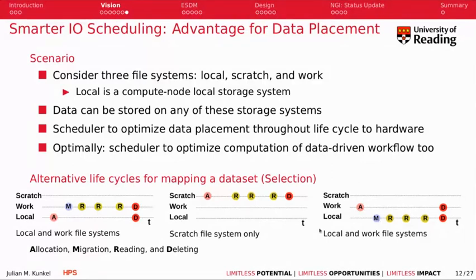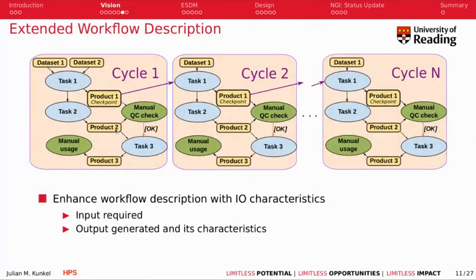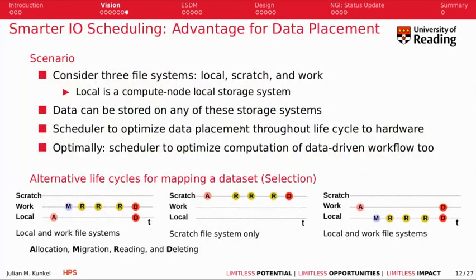This kind of placement is typically done by the users manually, which is tedious and often sub-optimal. Consider data products two and three — maybe you want to always store on the work file system, but maybe you want to change the storage location depending on the cycle you're in, or the performance characteristics of the system. It's really a complicated decision, but the key idea is that an I/O scheduler — a system-aware I/O scheduler — should make those decisions and, if needed, migrate the data on behalf of the user.